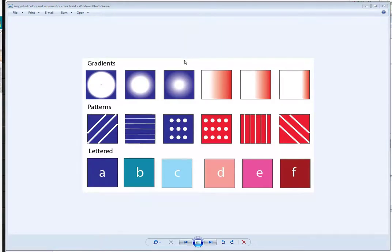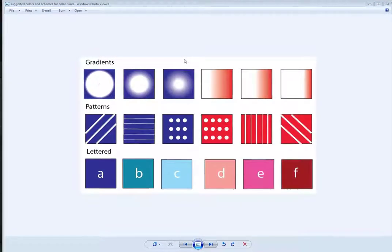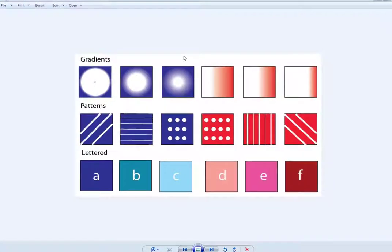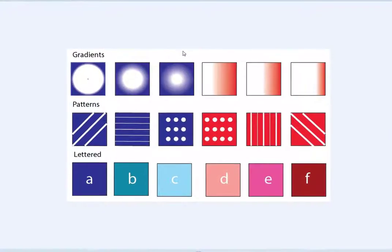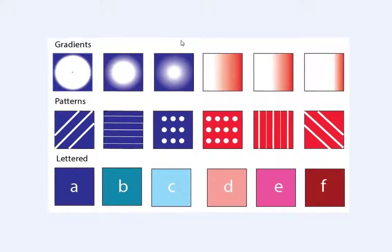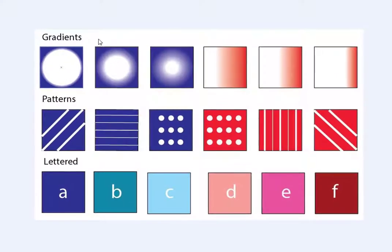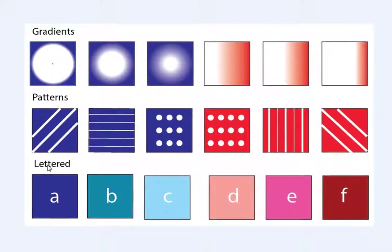If you really want to help people who are color blind, you don't use color only. You can use several different techniques to improve the understanding of color-coded material by adding gradients, patterns, and lettering.